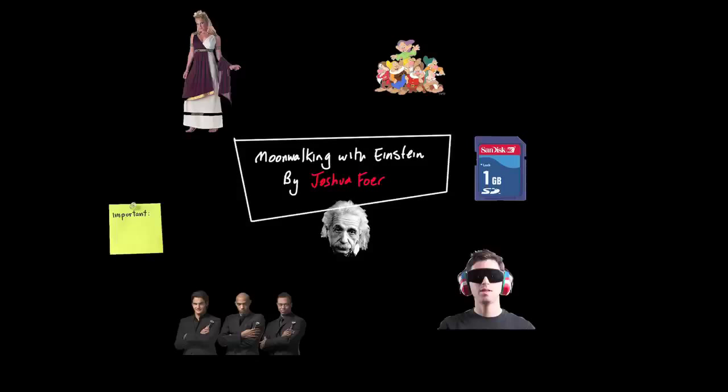Okay, so the book's called Moonwalking with Einstein and it's written by a young fellow, Joshua Foer. It's about human memory and improving human memory. Rather than go chapter and verse through the book, I'm just going to isolate most of the themes and talk to them specifically.